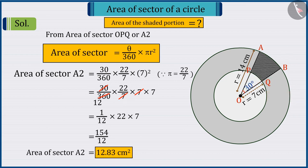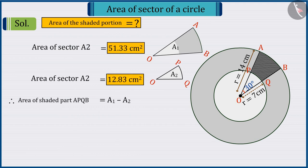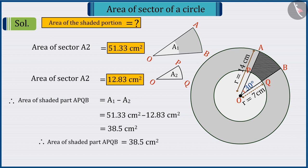Since we have to find the area of the shaded region, so, we subtract the area of A2 from the area of A1, thereby giving the area of the shaded area 38.5 square centimeters. So, we can say that the area of shaded part APQB is 38.5 square centimeters.